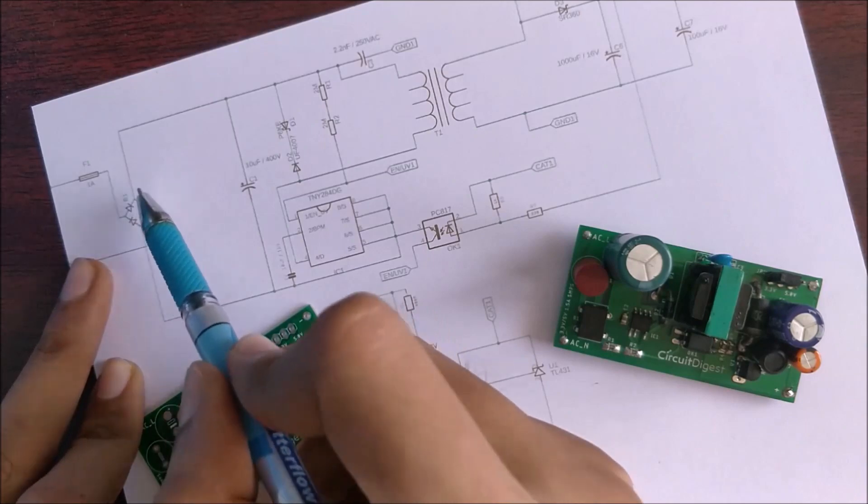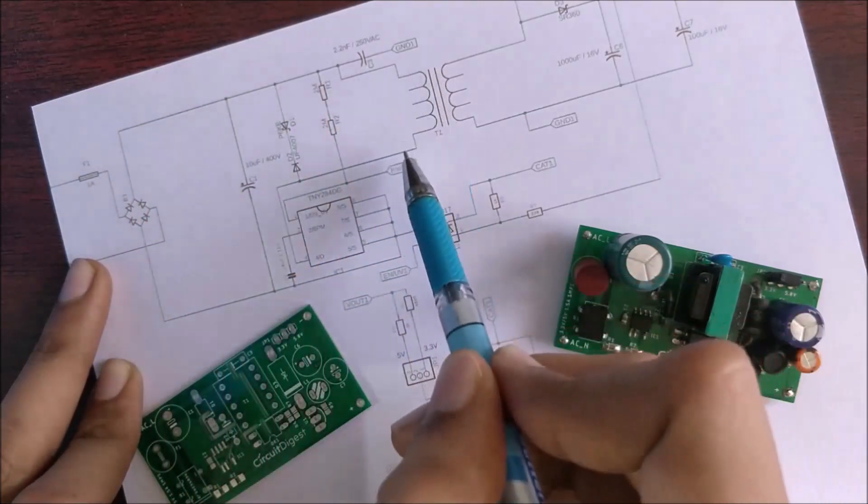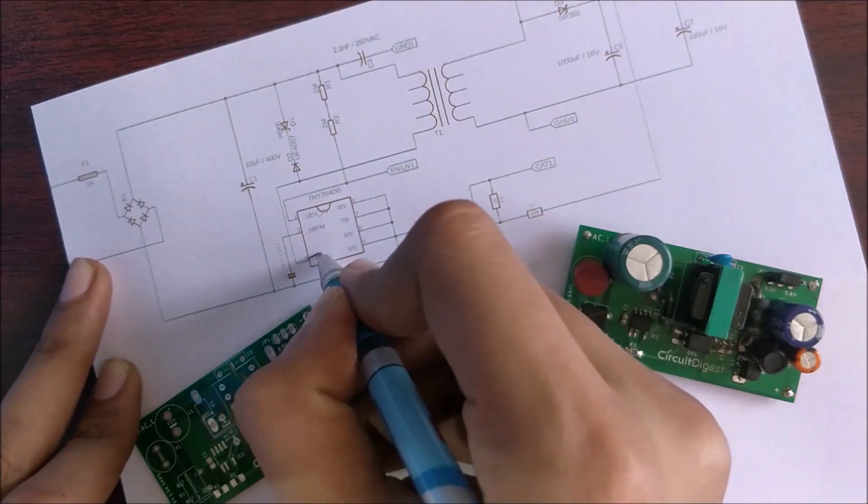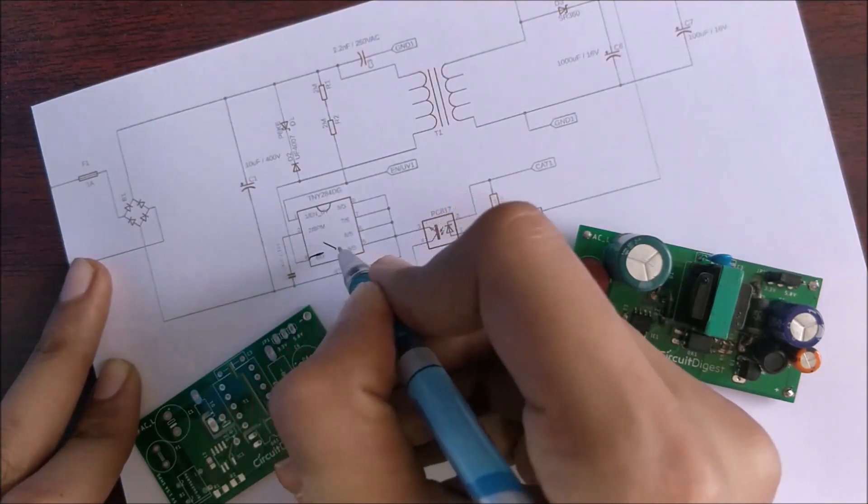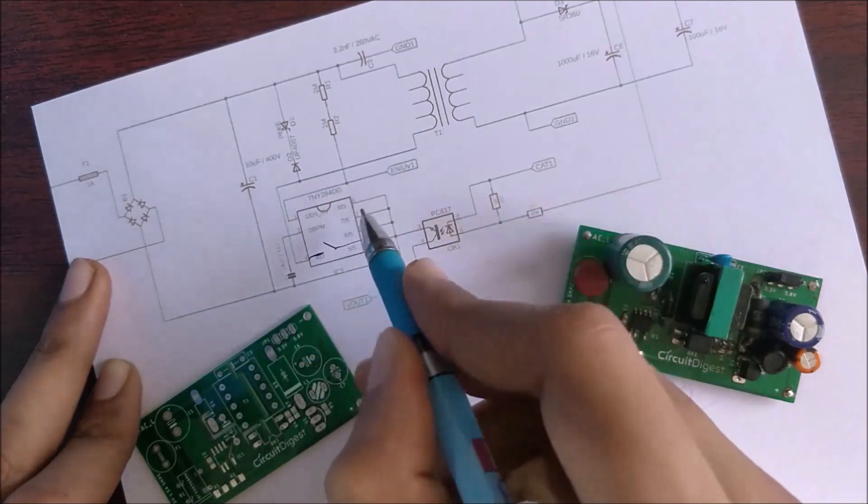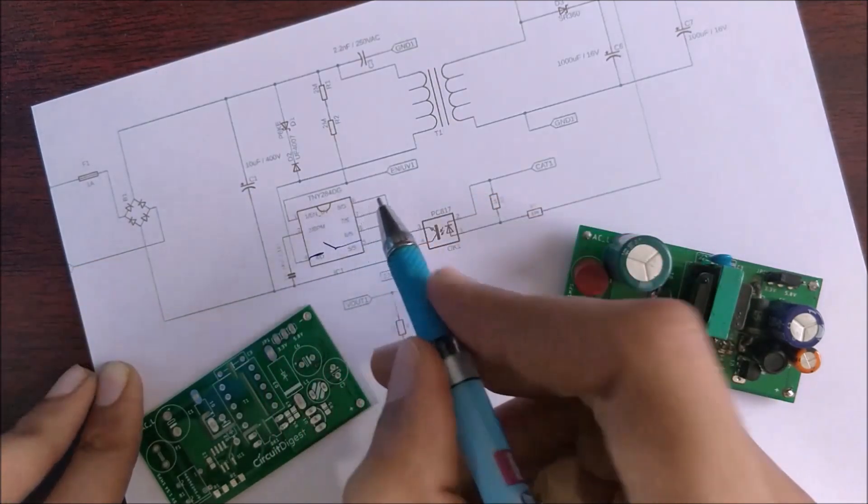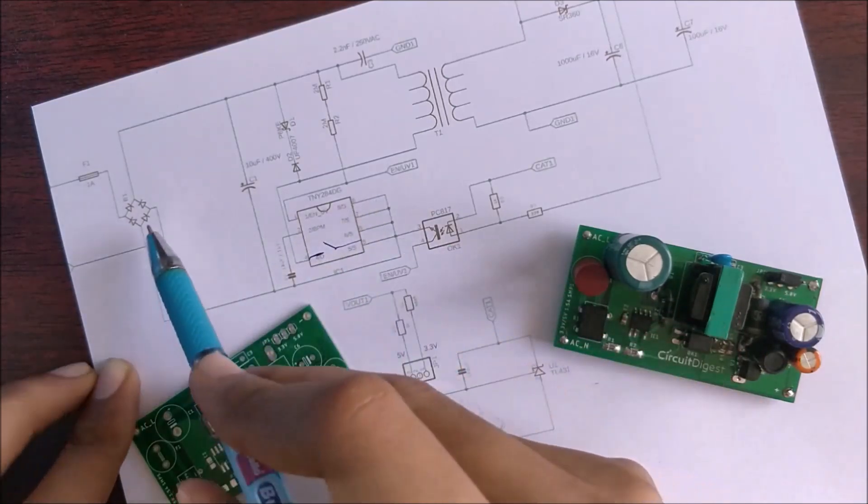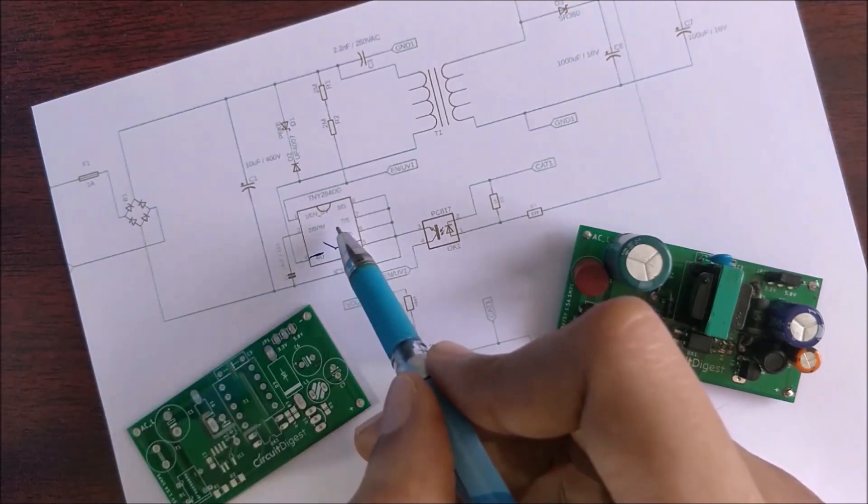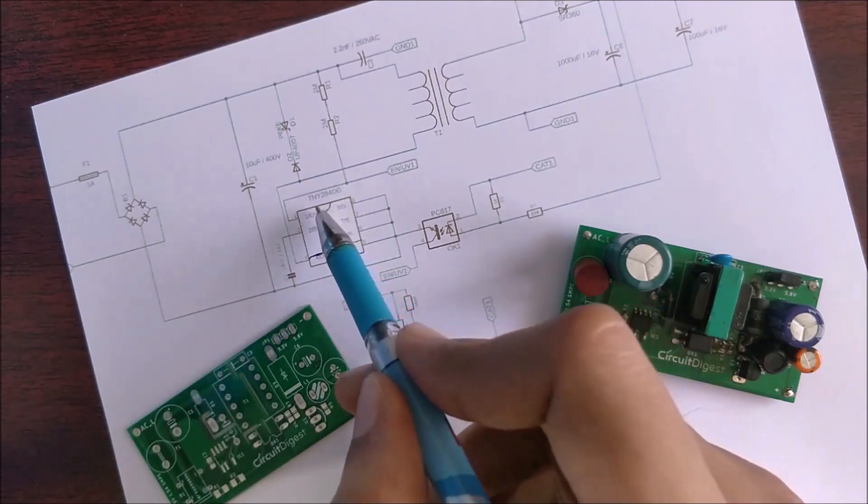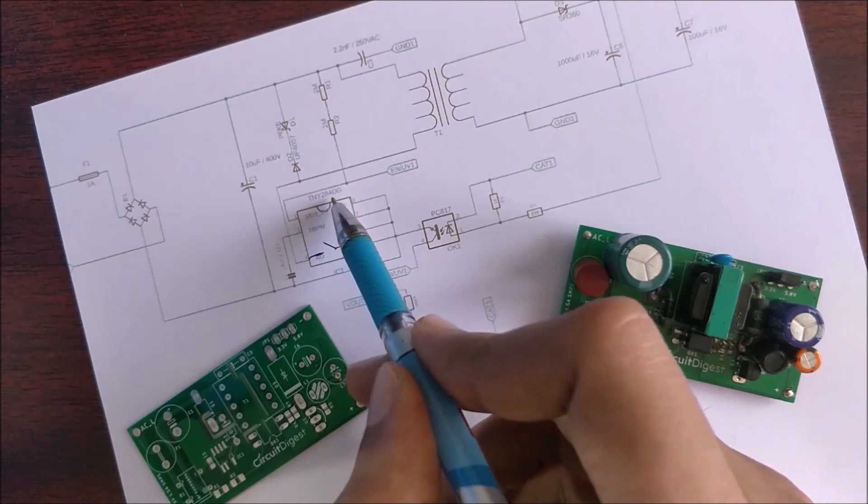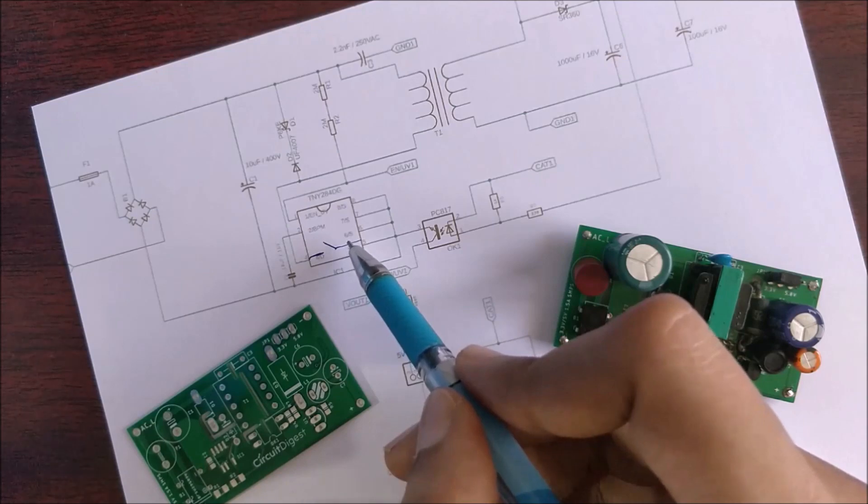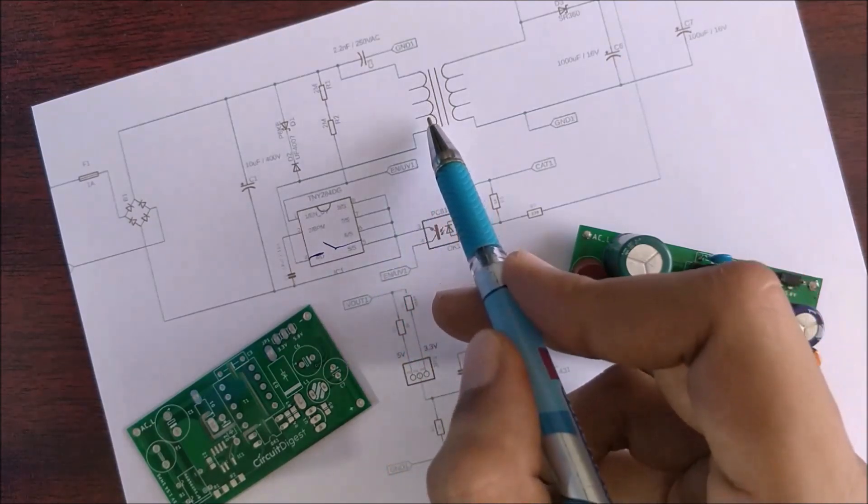If you take a look at the path you can see that it goes to the transformer and then comes to our switching regulator IC. Inside our switching regulator IC there will be a transistor which we will switch. Assume this is the transistor and it will be completing our circuit through this controller IC. This controller IC is from a company called Power Integration and the part number is TNY284DG. This is like the brain of our SMPS controller which will decide how fast the transformer switches.